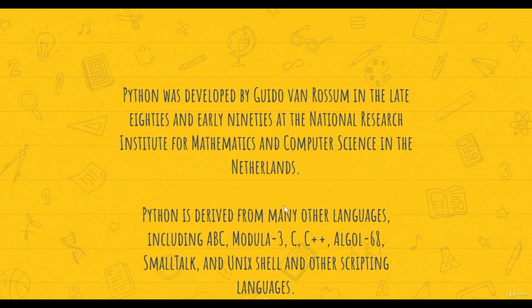Python is derived from many other languages including Algol 68, which were used in the early nineties and early 2000s. It was initially released in 1990 and it has been 30 years of popularity since then.